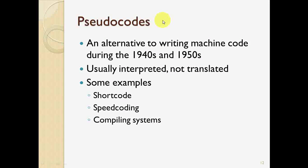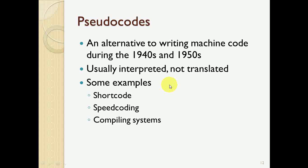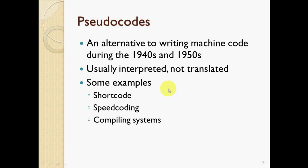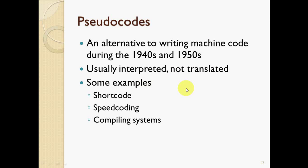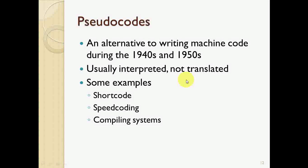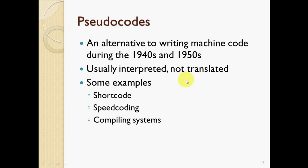Now a little about pseudocode — an alternative to writing machine code during the 1940s and 1950s. It was interpreted, not translated. Examples include Short Code, Speed Coding, and compile systems. Users can easily understand pseudocode even though it is not a true programming language, but you can identify all the logic through it. It is very easy to read.